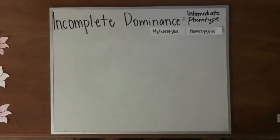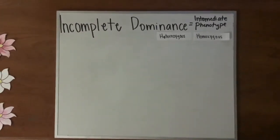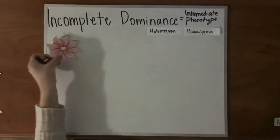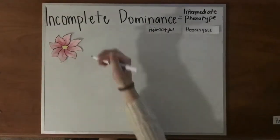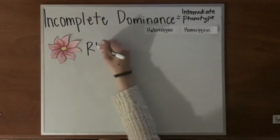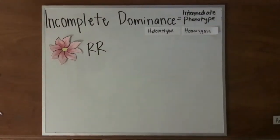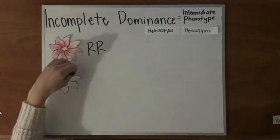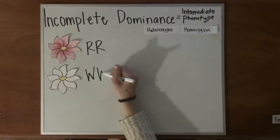Let's look at an example using flowers to understand this concept a little bit better. Let's take a red flower. Its genotype will be big R, big R. And let's take a white flower. Its genotype will be big W, big W.